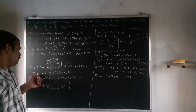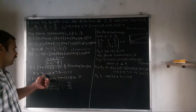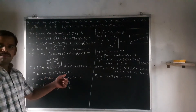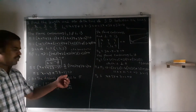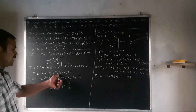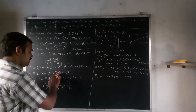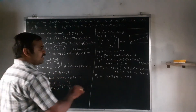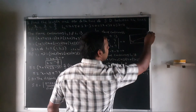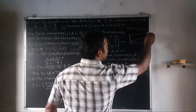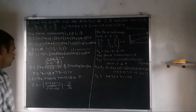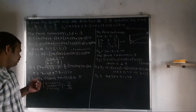Substituting λ = -5/11, plane π5 is: x - 4y + 7z - 13 = 0. This is the plane equation.